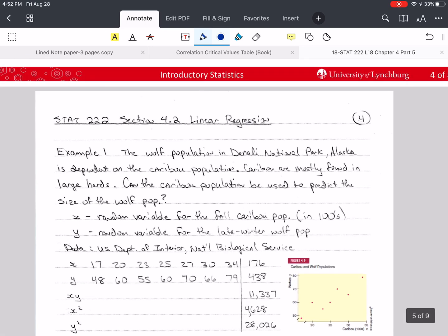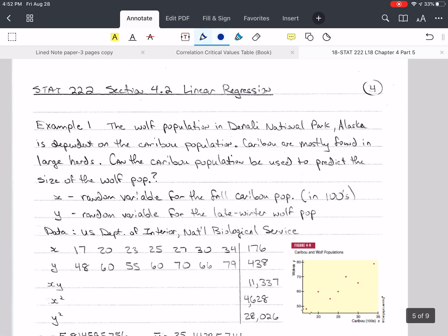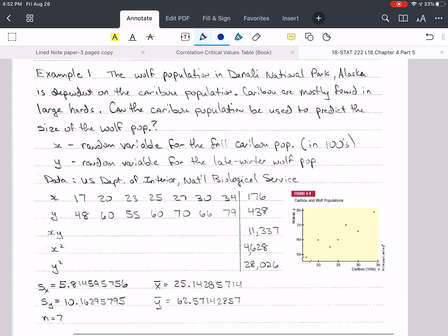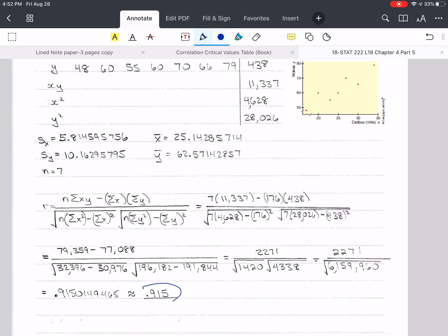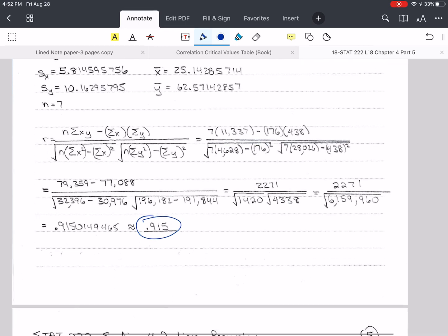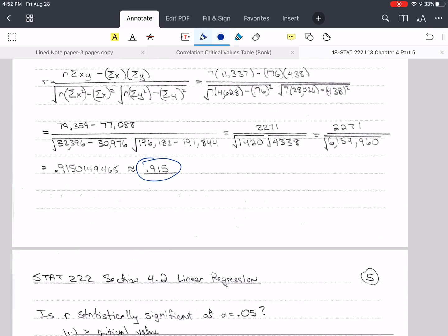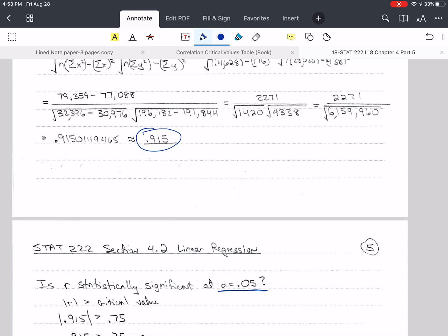So we were working with an example from last time talking about predicting the wolf population based on the caribou population in Denali National Park in Alaska. We had gotten through calculating the correlation coefficient as 0.915, so our next step is to test: is r statistically significant? Unless we state otherwise, use alpha equals 0.05. This is just a standard convention which makes our confidence level 95%, which is high.